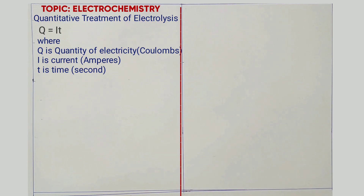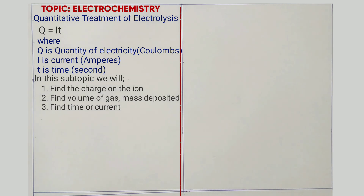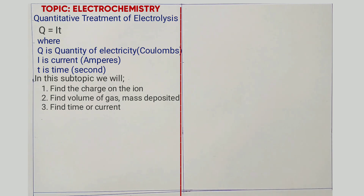Now there are three things we are going to do in this subtopic. We are going to look at how to find the charge on an ion, how to find volume of gas produced, how to find mass deposited or mass of a gas, and lastly how to find either current or time taken.